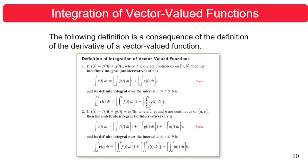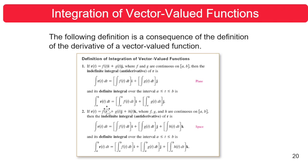So let us now define the integral of a vector-valued function. In number one, if r of t is f of t i plus g of t j, where f and g are continuous on the closed interval [a, b], then the indefinite integral of this vector-valued function r equals the integral of r of t dt. Its definite integral over the interval a ≤ t ≤ b equals the integral of f of t dt from a to b times i, plus the integral of g of t dt times j.